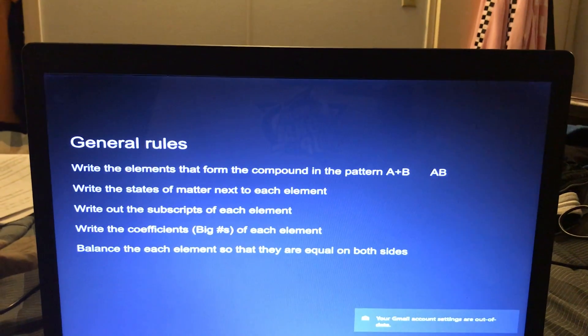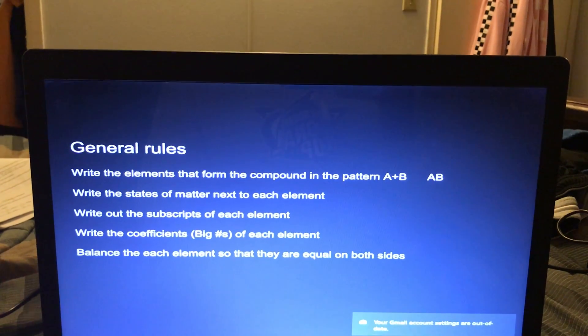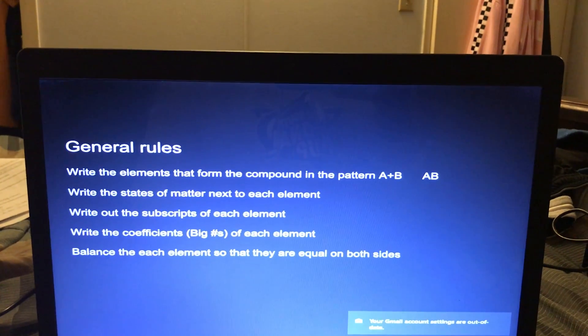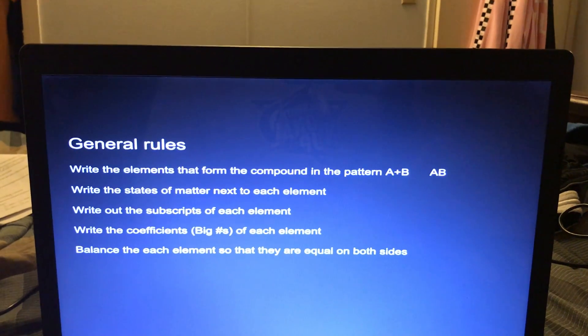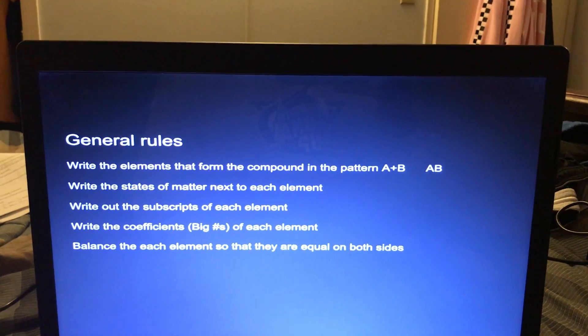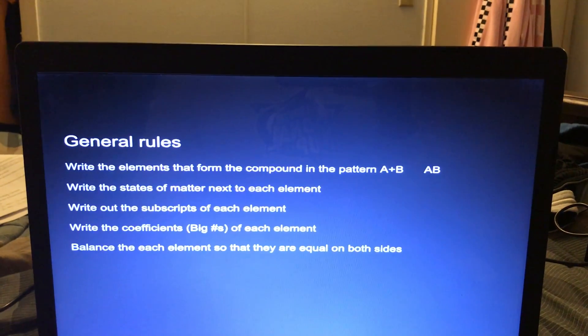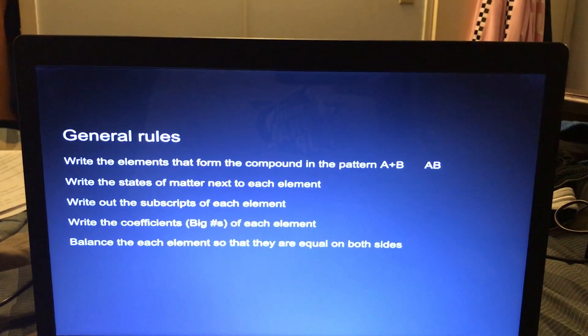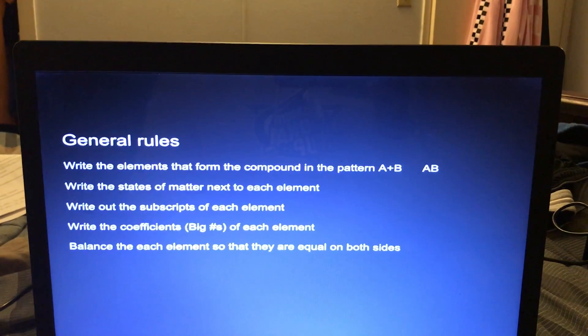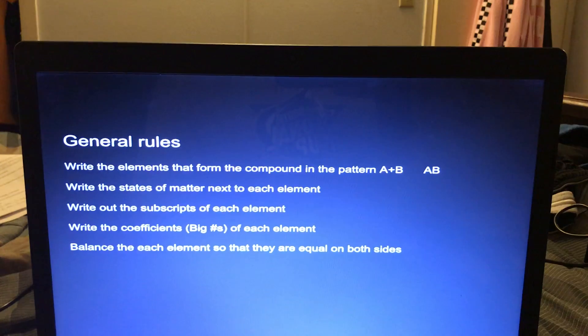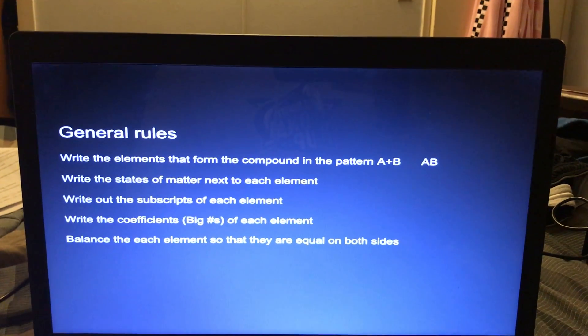General rules for the synthesis reactions are to write out the elements that form the compound in the pattern A plus B arrow AB, and then write out the states of matter next to each element. After that, write out the subscripts of each element. Fourth, write out the coefficients of each element. And fifth, balance each element so that they're equal on both sides.